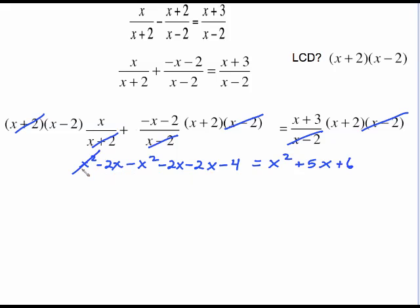Clean up your left side. The x squareds are going to cancel. Negative 2x, negative 2x, negative 2x gives me negative 6x minus 4 equals this right side which hasn't changed any.